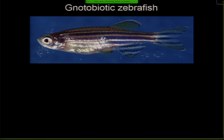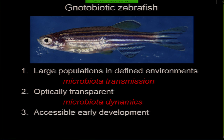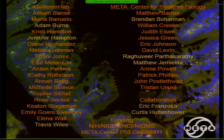In summary, the notobiotic zebrafish model is really useful for performing experiments where you want large populations with defined environments and looking at things like microbiota transmission. The optical transparency is great for questions about microbiota dynamics. The early accessible development and ability to work at very large scales allows us to define and discover new microbial activities. I'd like to acknowledge all the people in my lab, colleagues at the Meta Center for Systems Biology at the University of Oregon, and other important colleagues. I'd be happy to take questions.